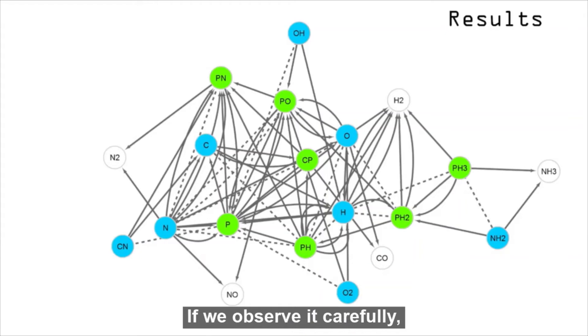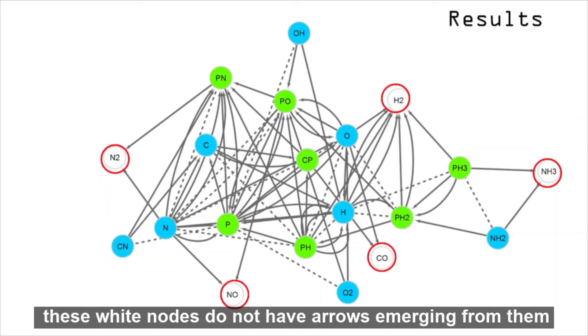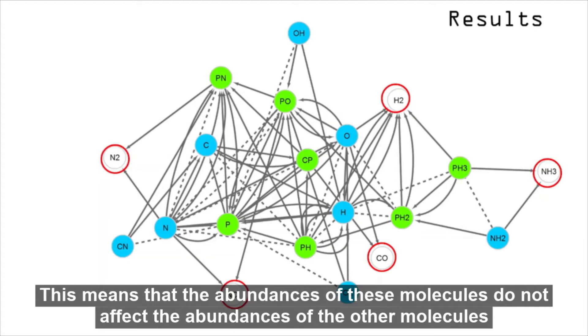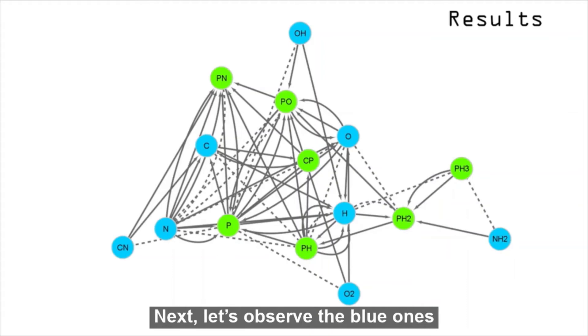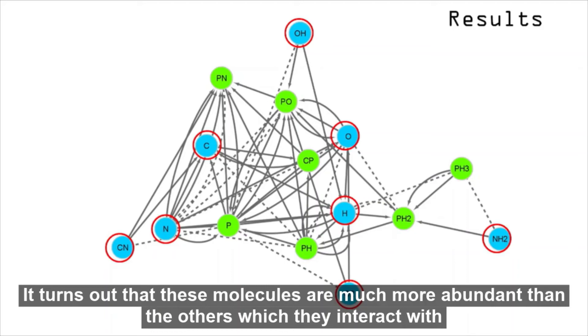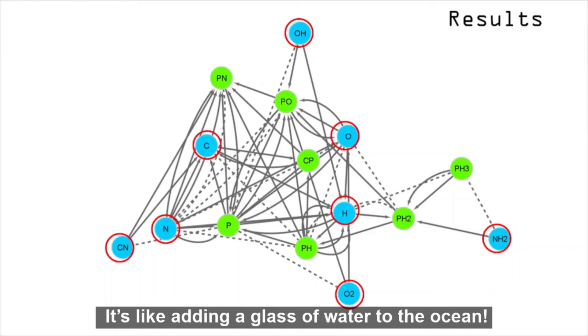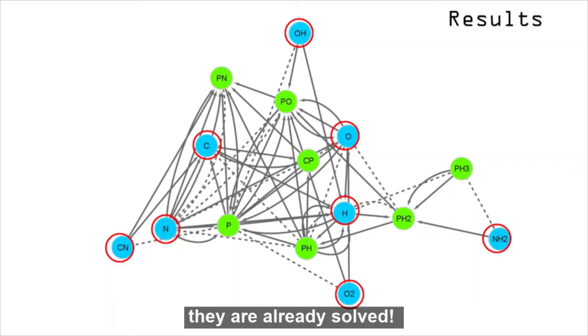If we observe it carefully, these white nodes do not have arrows emerging from them. This means that the abundances of these molecules do not affect the abundances of the other molecules, so we can just get rid of them. Next, let's observe the blue ones. It turns out that these molecules are much more abundant than the others which they interact with, so we assume that they are constant. It's like adding a glass of water to the ocean. So, if they are constant and we know their initial abundances, they are already solved. What is left is much easier, isn't it?